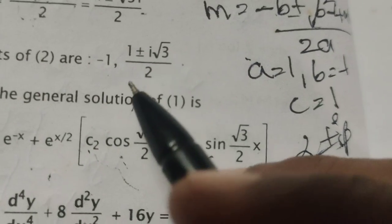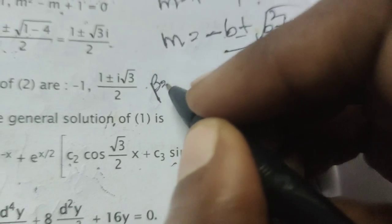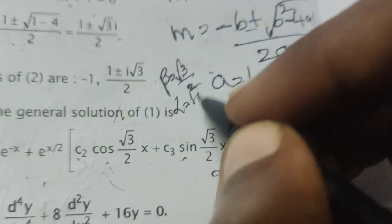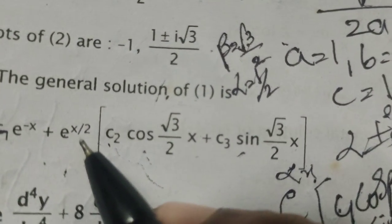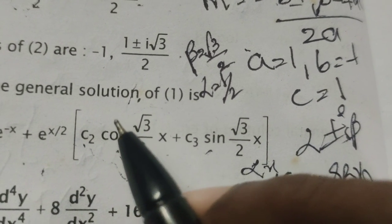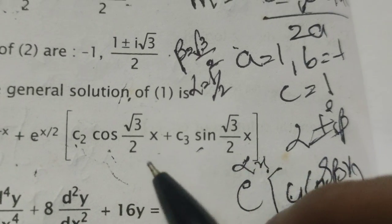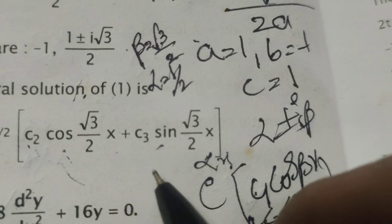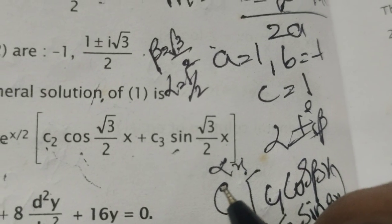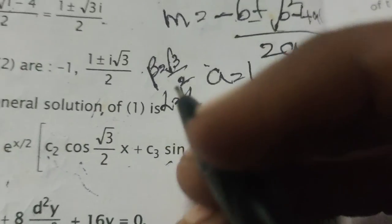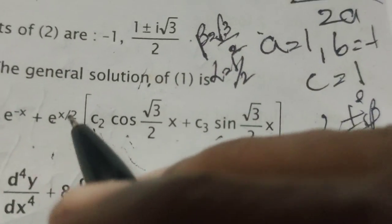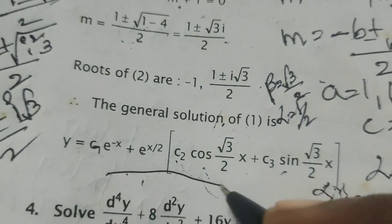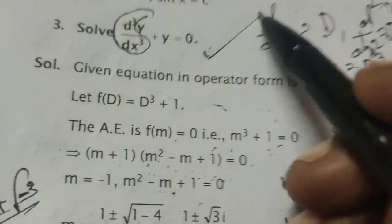Therefore, the general solution of the given differential equation D³ + 1 into y = 0 is: y = c₁e^(-x) + e^(x/2)(c₂cos(√3/2 · x) + c₃sin(√3/2 · x)). Thank you.